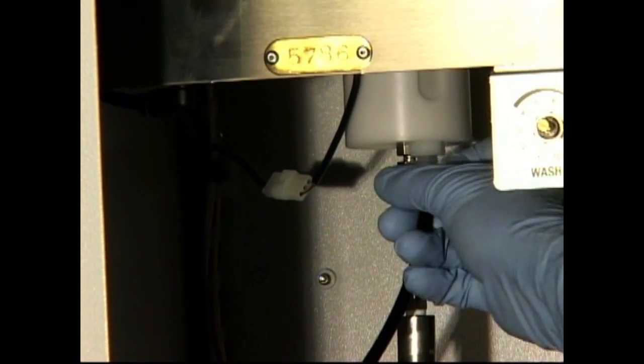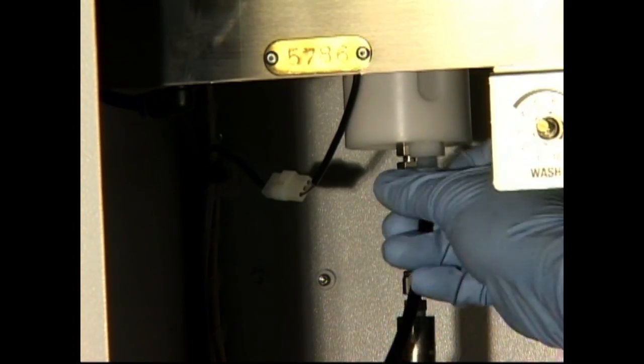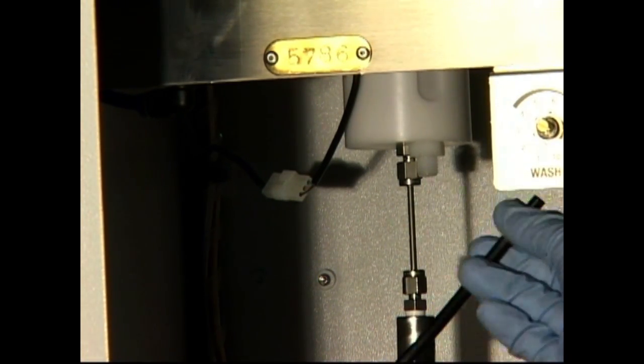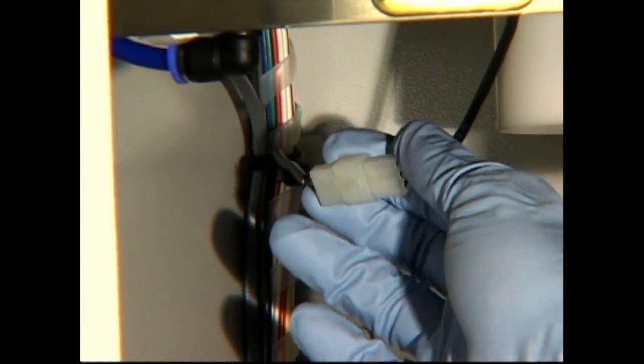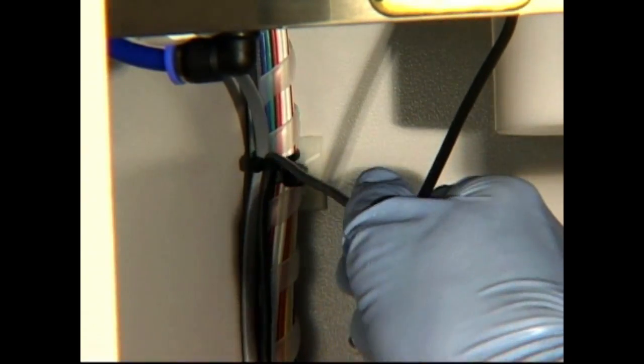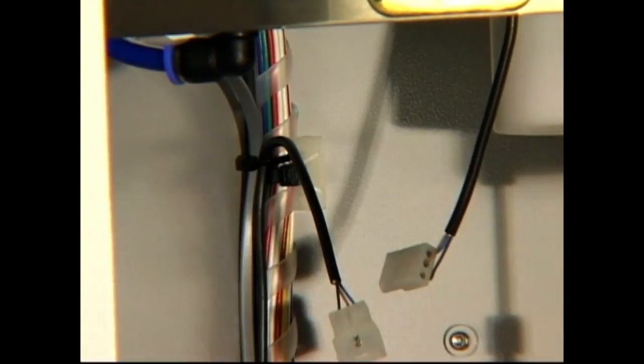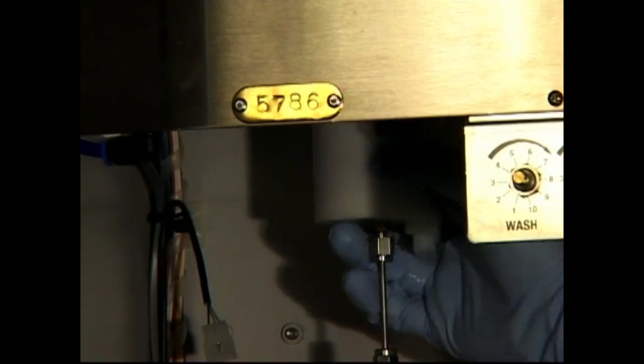Disconnect the tube on the bottom of the reservoir. Unplug the level indicator. Remove the reservoir assembly.